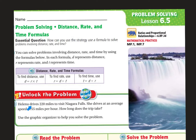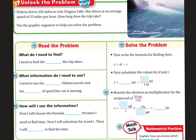Let's unlock the problem. Helena drives 220 miles to visit Niagara Falls. She drives at an average speed of 55 miles per hour. How long does the trip take? Use the graphic organizer to help you solve your problems. I need to find out the amount of time, because it says how long does the trip take. I need to use the distance that Helena travels and the rate of speed that the car is moving.